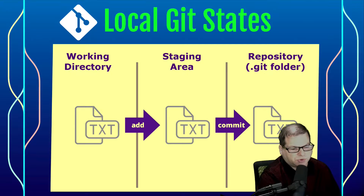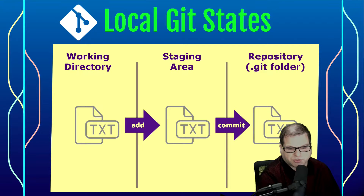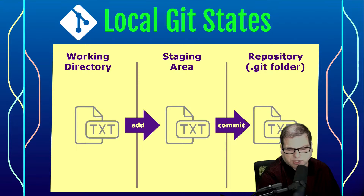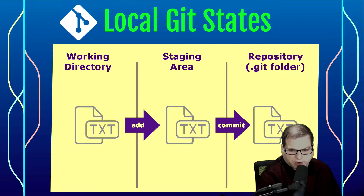So this is the full process. We start with the working directory — any new files or changes to existing files. We add those changes one by one or all at once into the staging area. Once we have built up all the changes we want to commit at one time, we commit those changes into our Git repository.